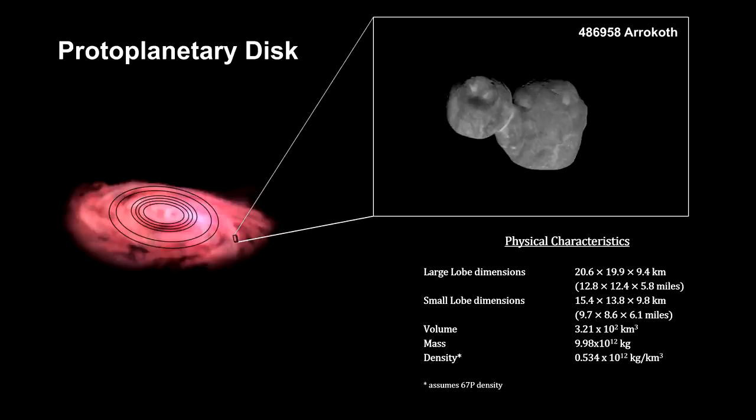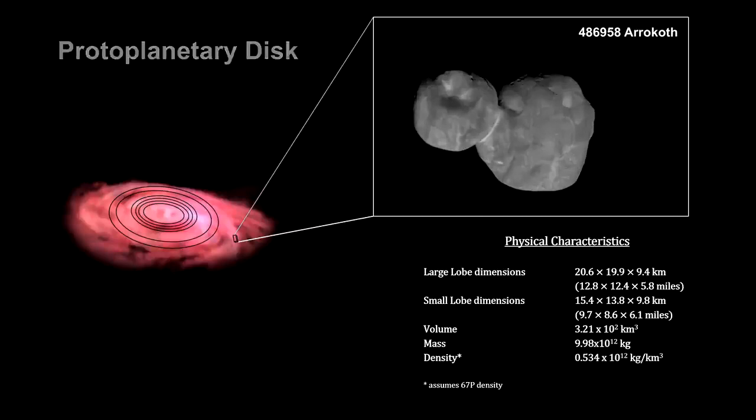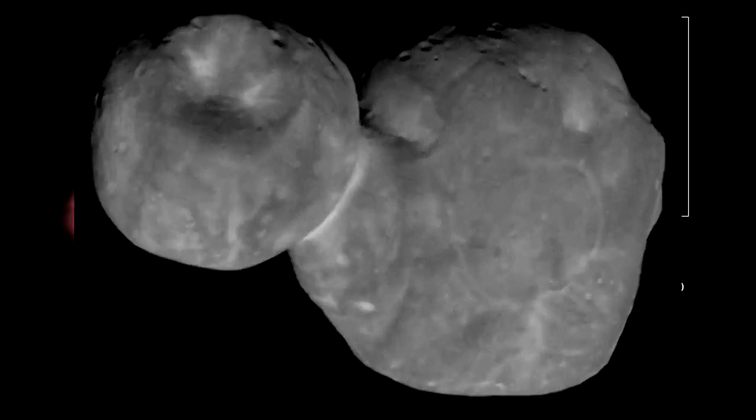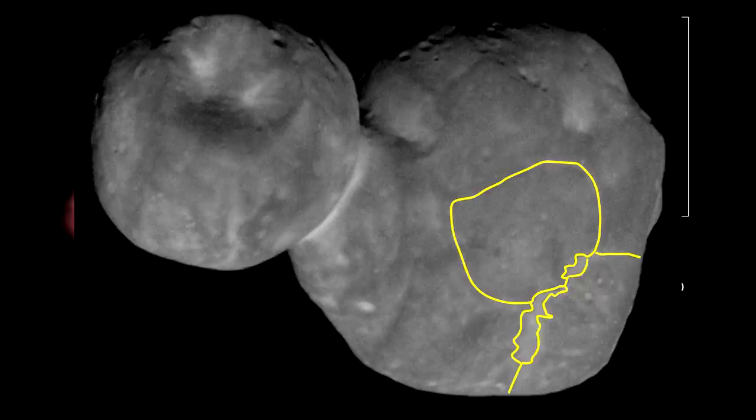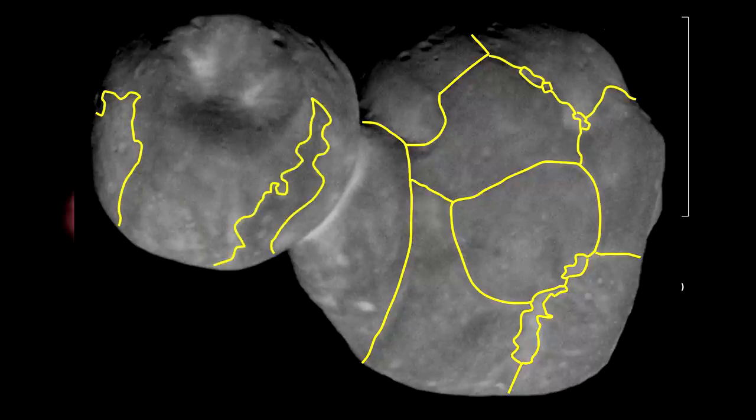A close examination of the surface shows lighter lines separating sections of the lobe. These indicate that Arrokoth was built piece by piece by the coalescing of over a dozen smaller planetesimals.